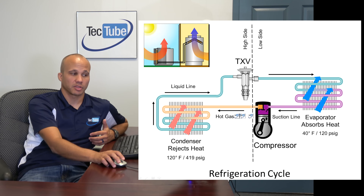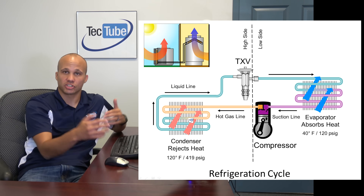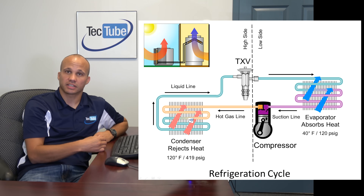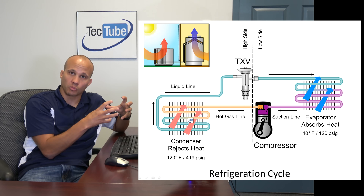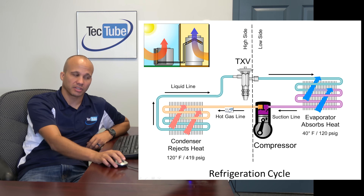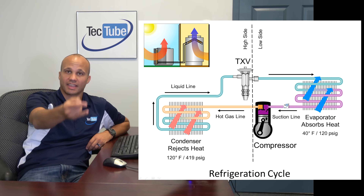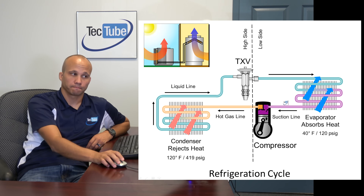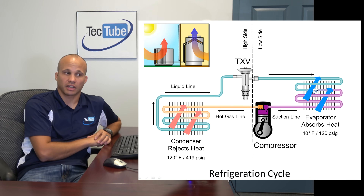Some of the pipes are labeled on the diagram. The hot gas line between the compressor and the condenser is normally internal to the condensing unit, since the condensing unit has both the condenser coil and compressor together — so you don't typically see that hot gas line. The liquid line and suction line are the two lines you see going from outdoors to inside the building. The line between the TXV and the evaporator is typically all within the evaporator coil assembly, so you don't see it unless you remove the cover.